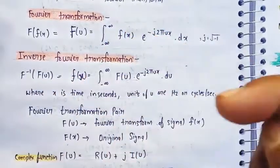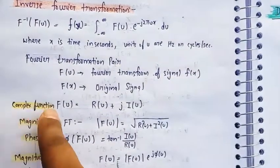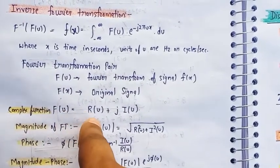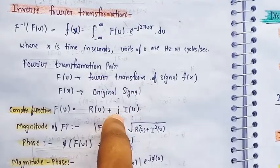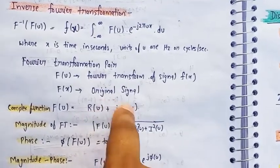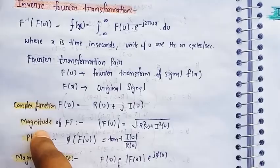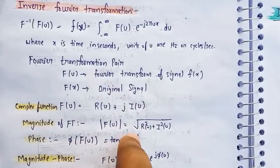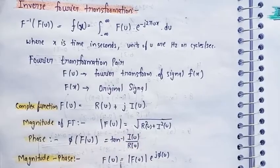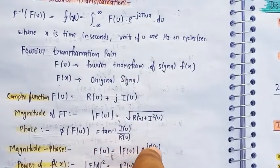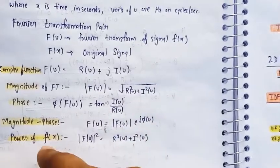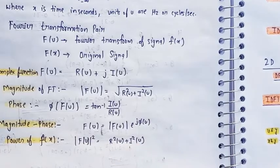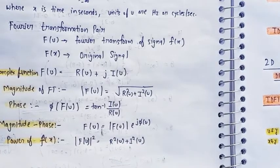Now the complex function is nothing but F of u, which is equal to real part plus imaginary part, so j is used to show iota. Magnitude of FT is equal to square root of R square plus I square. Phase is tan inverse I upon R. The magnitude phase F of u equals |F(u)| e to the power j psi(u). The power of f(x) is equal to F of u whole square, equal to R square plus I square.